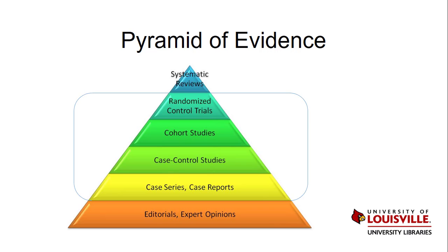Different types of research studies make up the center of the pyramid. Case series and case reports are observational and require the least rigorous methodology, so they are the lowest level of evidence in research studies and also the most prevalent. Randomized controlled trials, on the other hand, require the most rigorous methodology to eliminate bias and are therefore the least prevalent study, but they have the highest level of evidence.